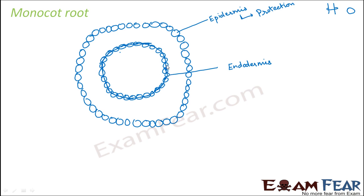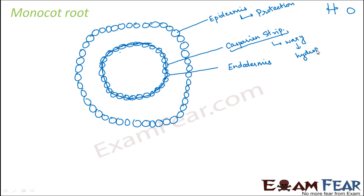This waxy layer is known as the Casparian strip. Wax is a fat which is hydrophobic, so it prevents water from leaking between the cells. That is one of the most important functions of this outer layer. So the endodermis will regulate water and ions moving in or out of the vascular tissue.